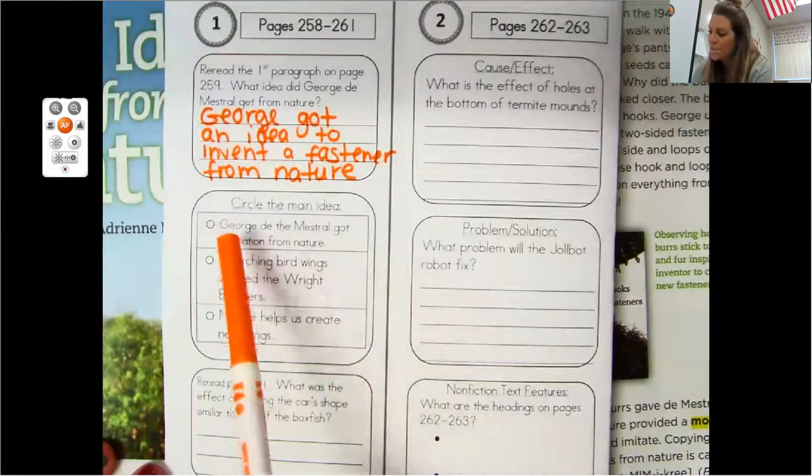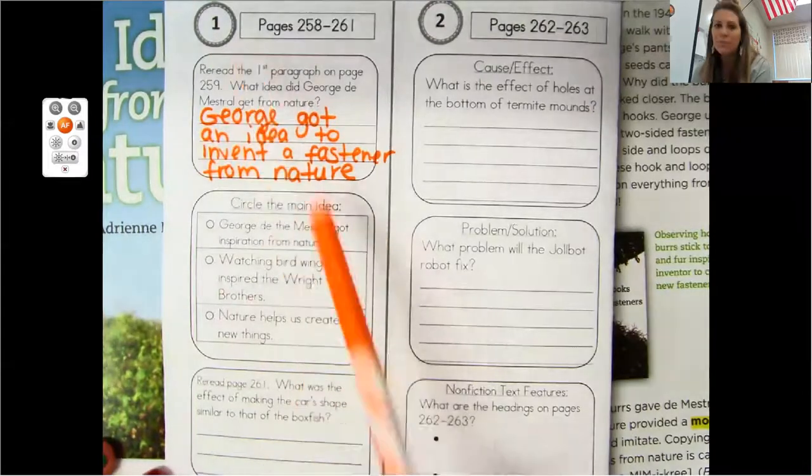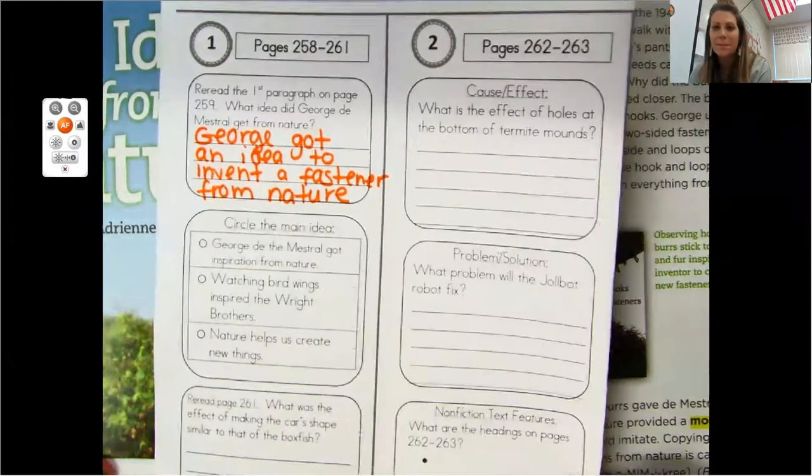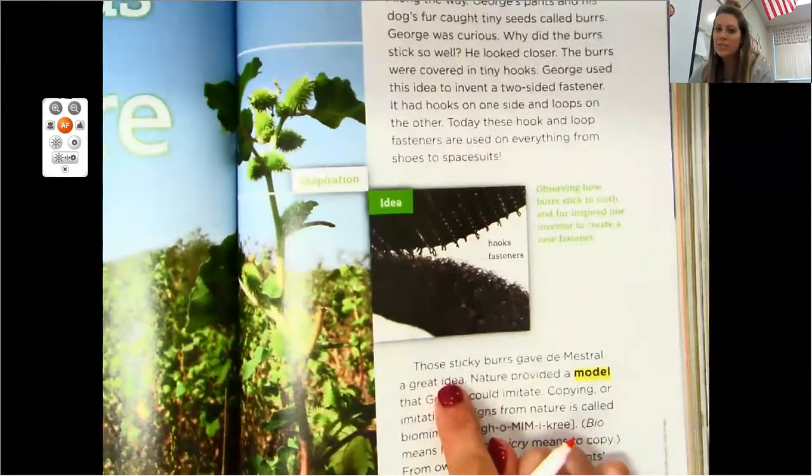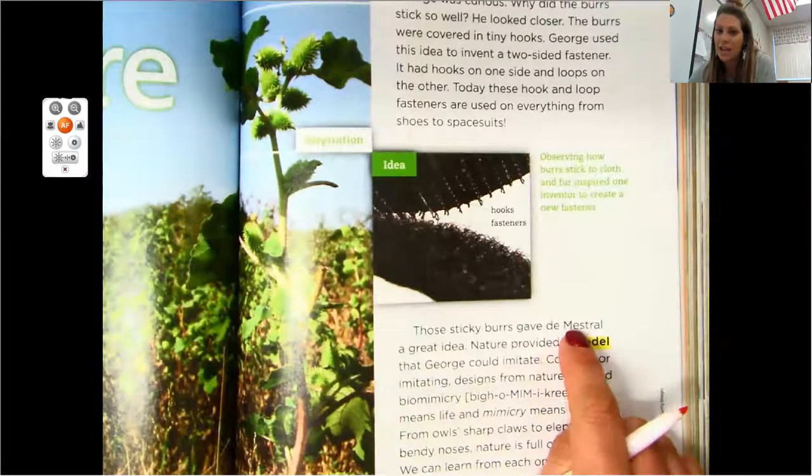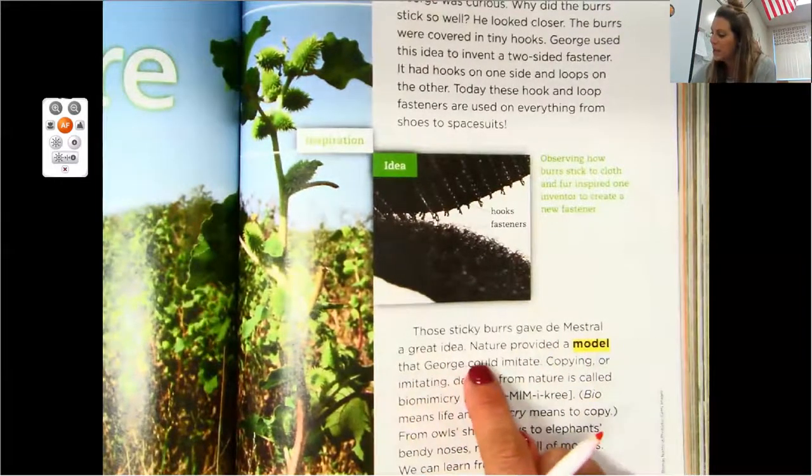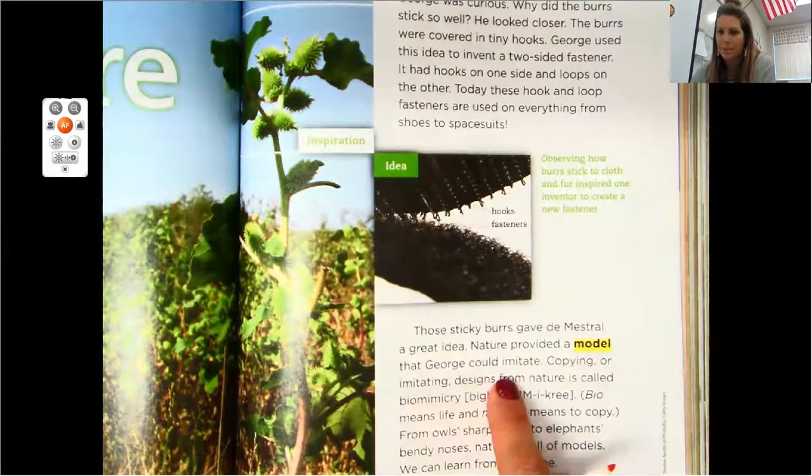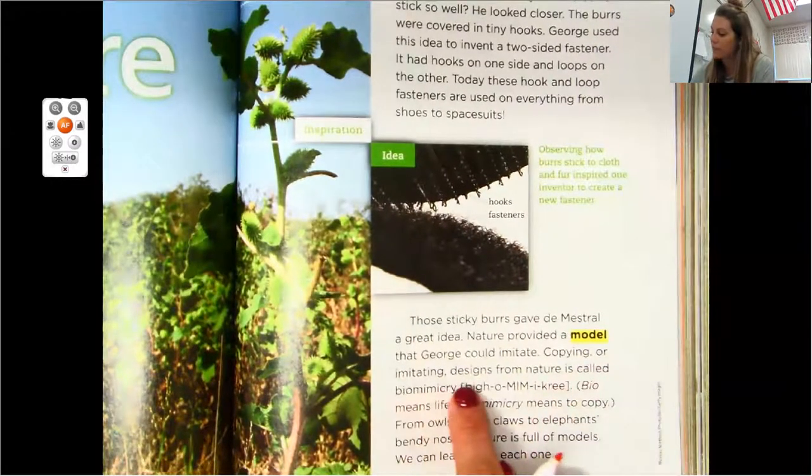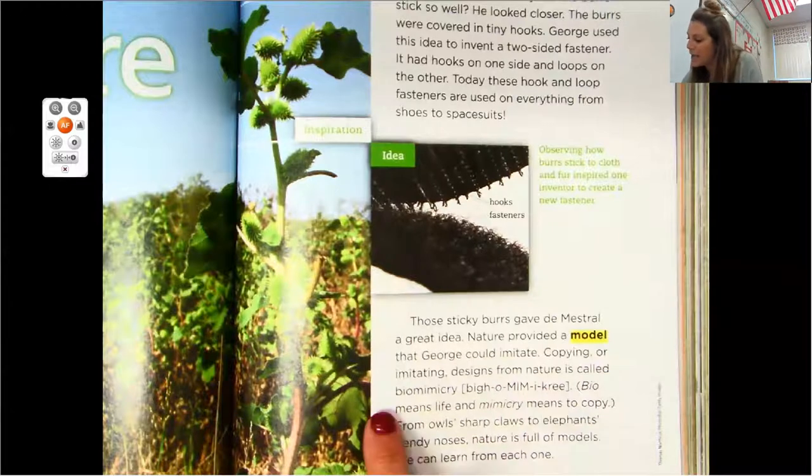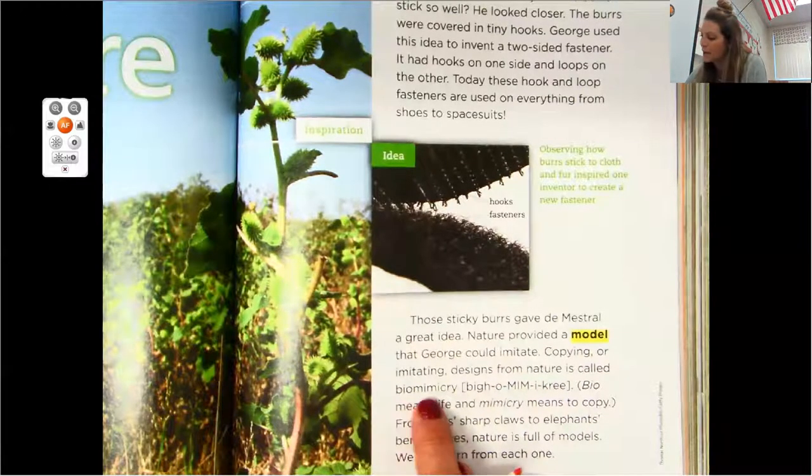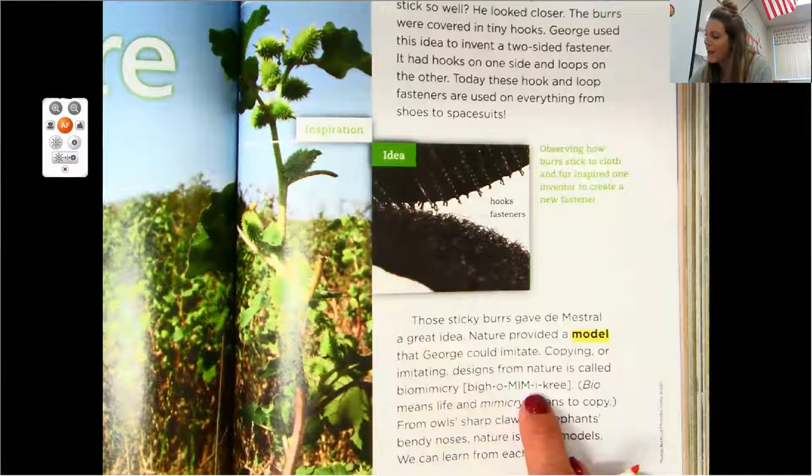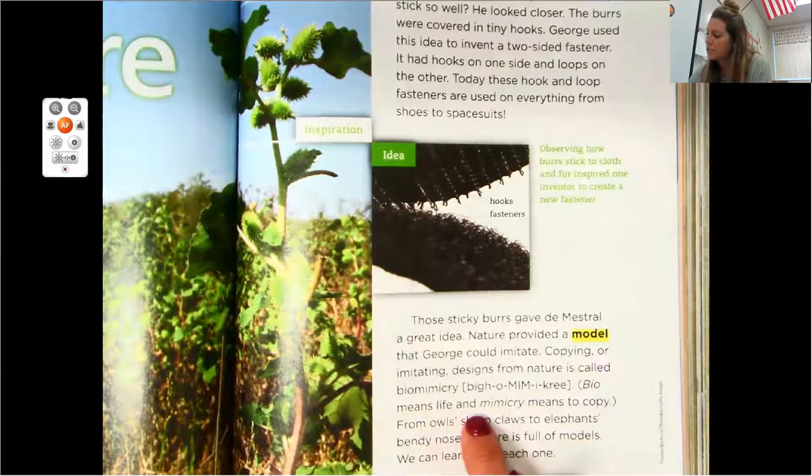So the next question they want to know the main idea. So let's keep reading. Let's read the rest of this page and see if we can come up with the main idea. Those sticky burrs gave Day Mestral a great idea. Nature provided a model that George could imitate. That means he could copy it. Copying or imitating designs from nature is called biomimicry. Biomimicry. See how they have it? That's a big word. They have it sounded out for you.